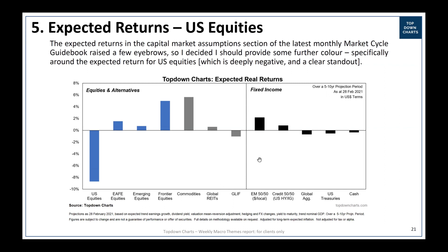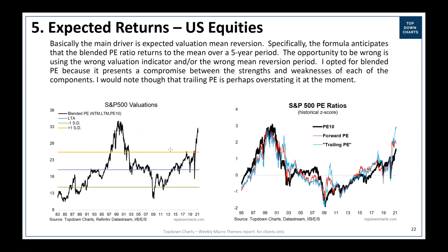I would say, first of all, this is real returns. So we have gotten about just under 2% added — dog-piled onto that in terms of taking off the expected inflation. But basically, we'll start off with the mechanics of that. It's mostly quantitative. And the main reason that it's so negative is the expectation of mean reversion — valuation mean reversion.